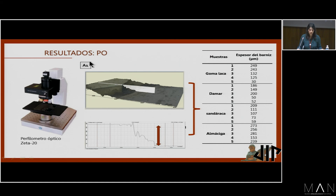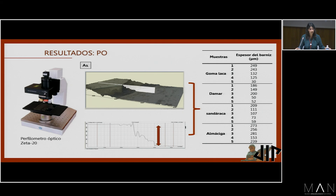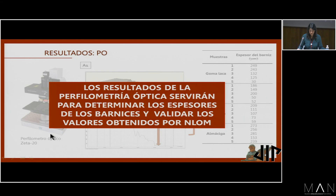Primero analizamos las muestras mediante perfilometría óptica. Esta es una técnica que nos permite determinar los perfiles de las muestras. En sí no es una técnica destructiva, pero requería de un raspado de la muestra para tener la base de la misma y poder obtener el perfil, por lo que pasaría a ser en este caso una técnica destructiva. Los resultados de la perfilometría óptica nos sirven para determinar los espesores de los barnices y validar los valores obtenidos posteriormente por la microscopía óptica no lineal.